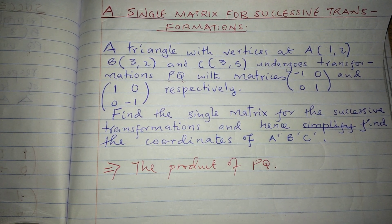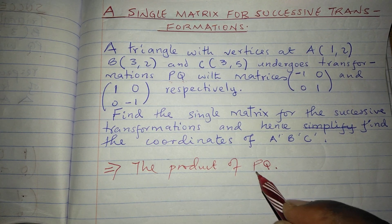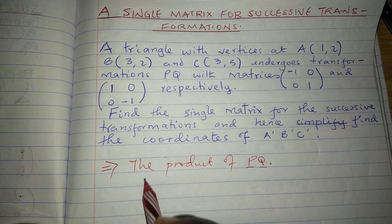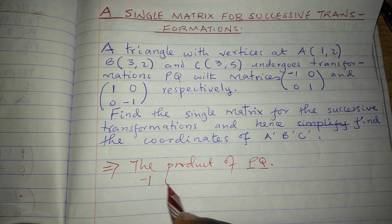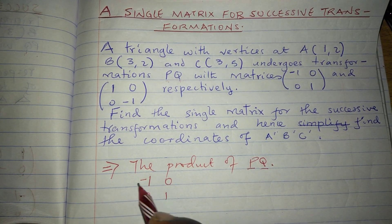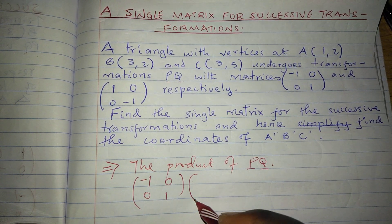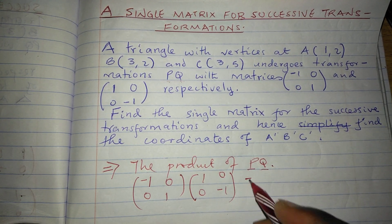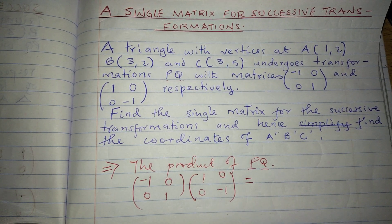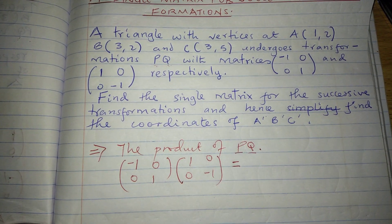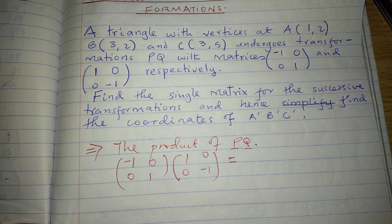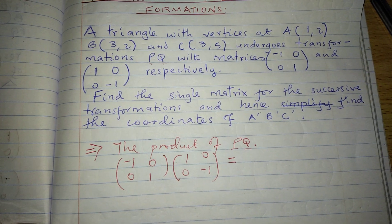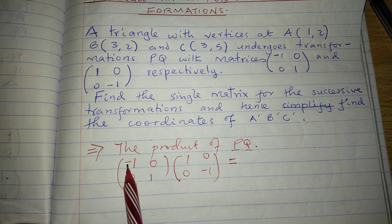This gives us a single transformation that represents PQ. So we will have the matrix with entries negative 1, 0, 0, 1 multiplied by the matrix with entries 1, 0, 0, negative 1. When multiplied, these two matrices will give us a single matrix of transformation that will represent the successive transformations.